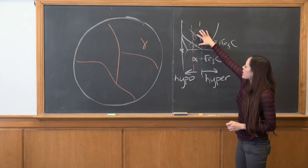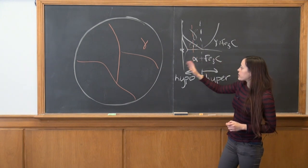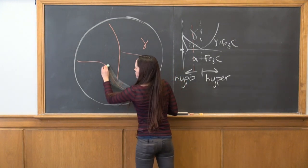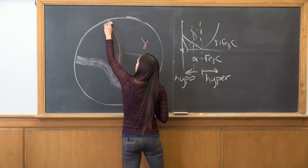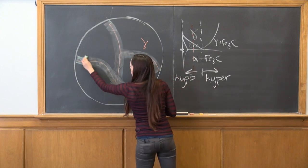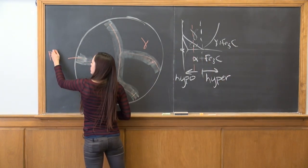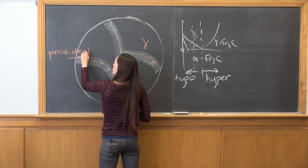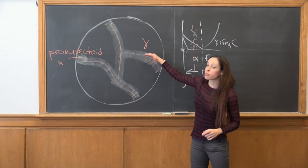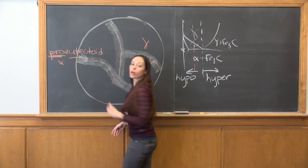If we now look at as we cool, we enter the austenite plus ferrite two-phase region, and when this happens ferrite starts to form along the phase boundaries. So here we have pro-eutectoid ferrite. This is the ferrite that has been formed above the eutectoid temperature, so it is pro-eutectoid.